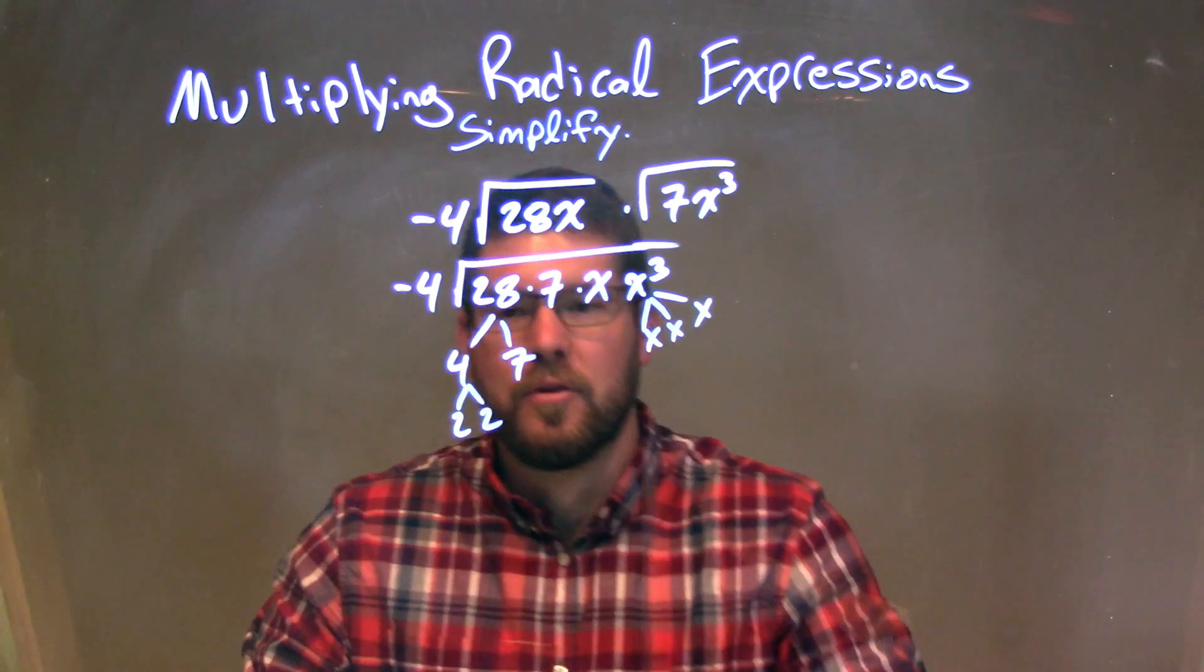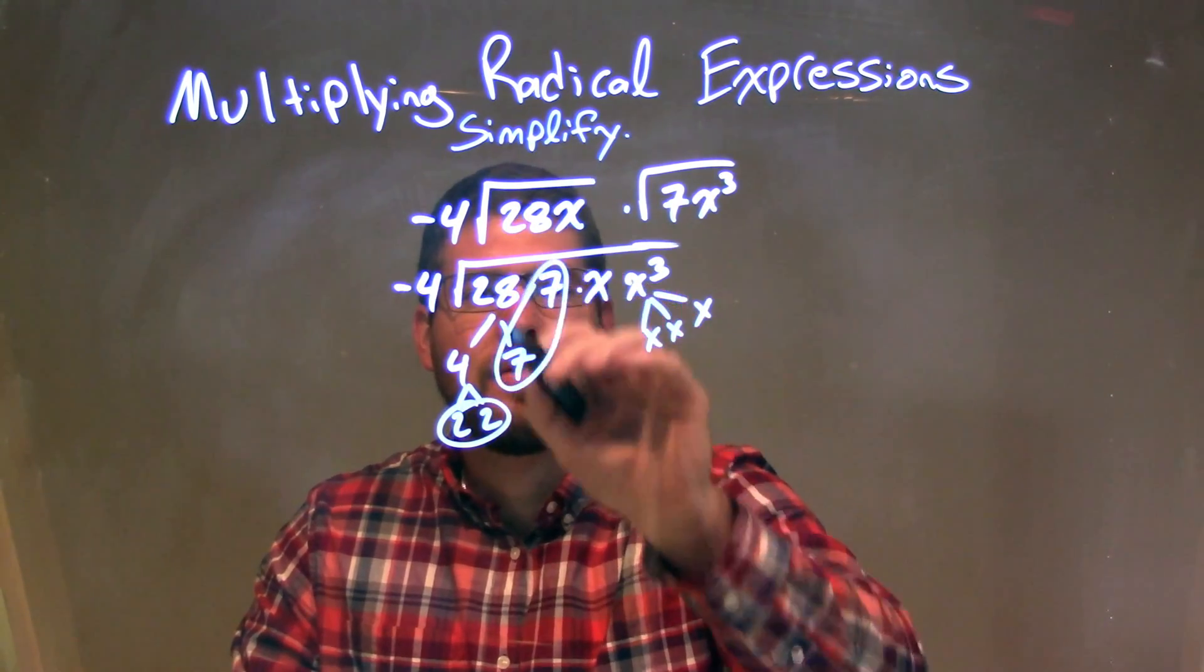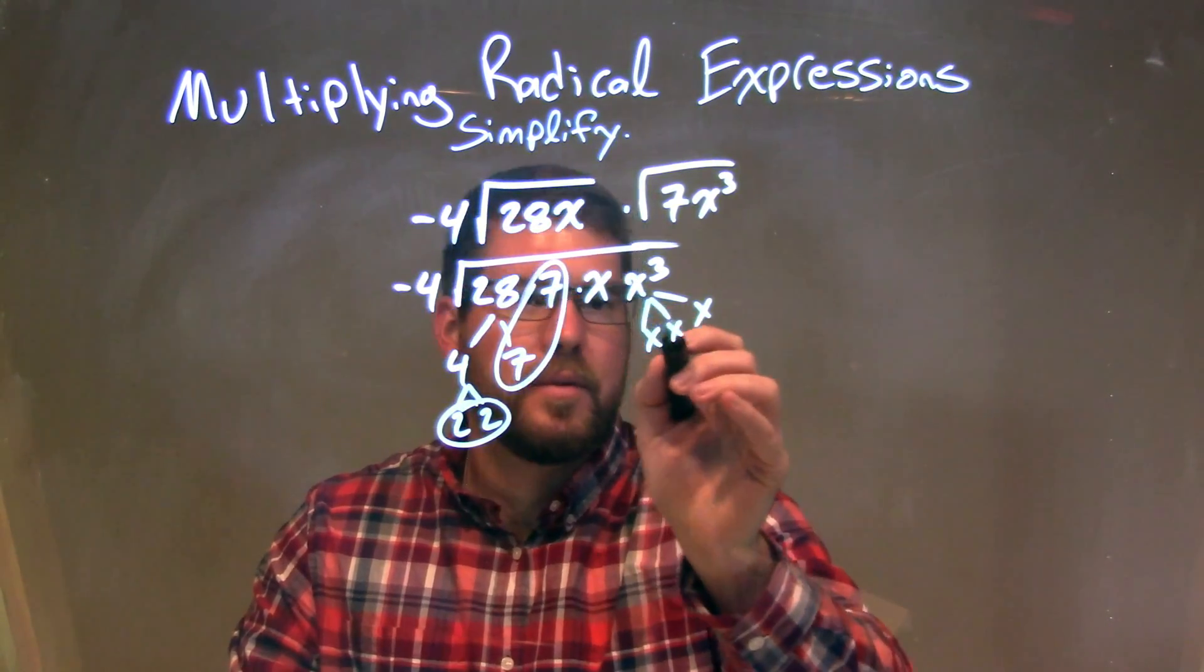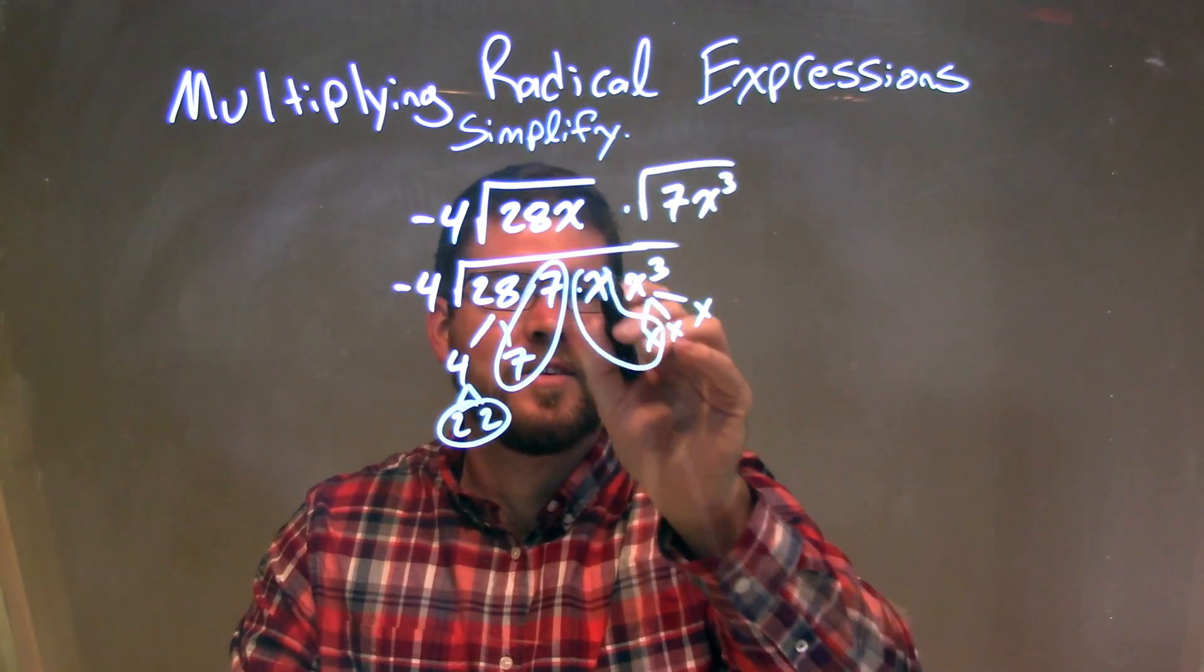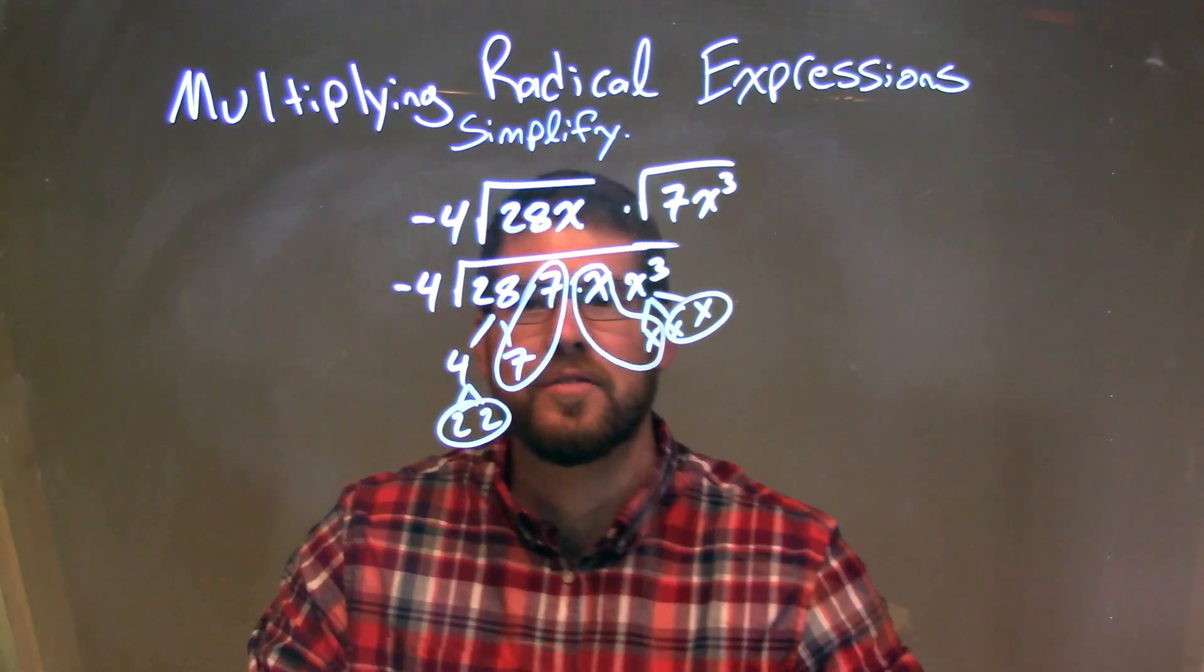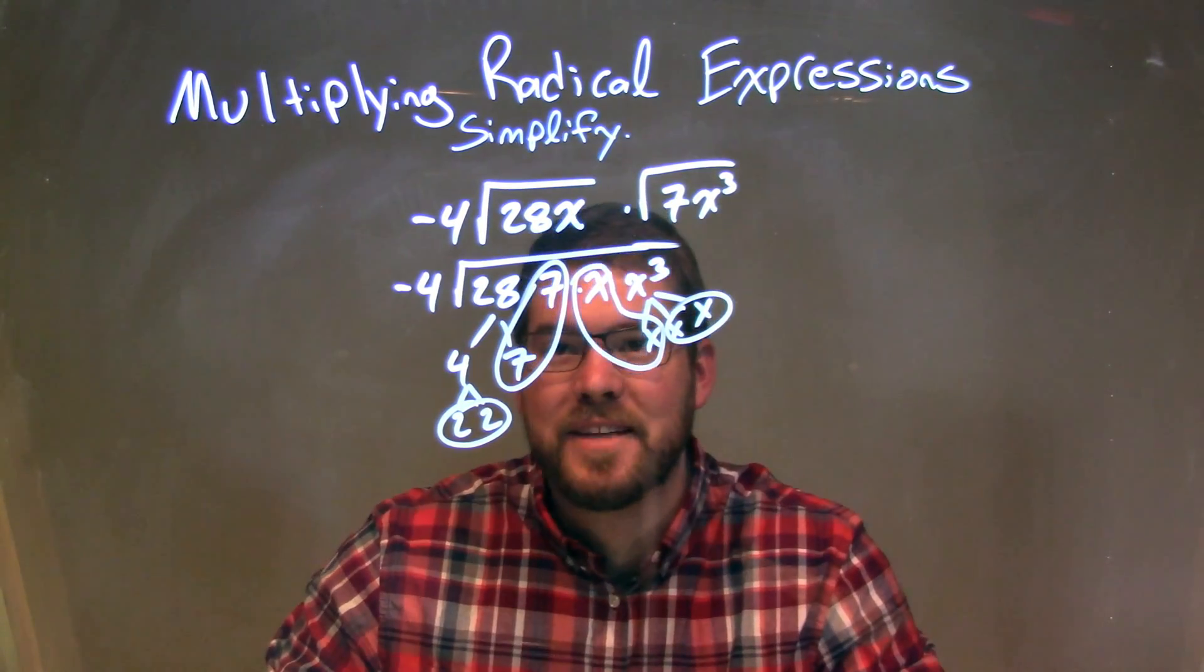So now let's circle our pairs. I have a pair of 2s right there, I have a pair of 7s right there. I have a pair of x's right there, and another pair of x's. So everything has a pair inside the square root, which is great.